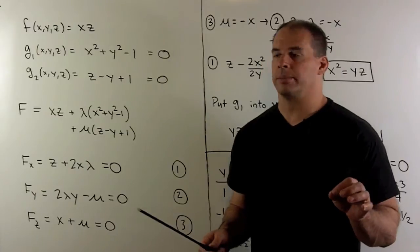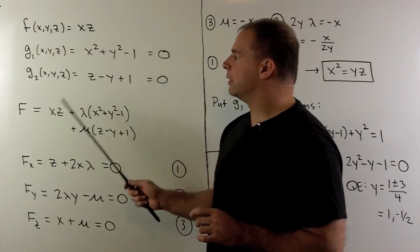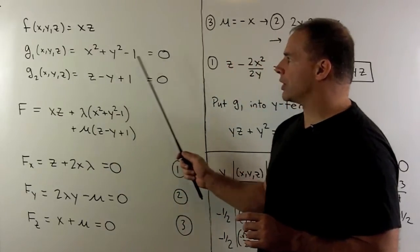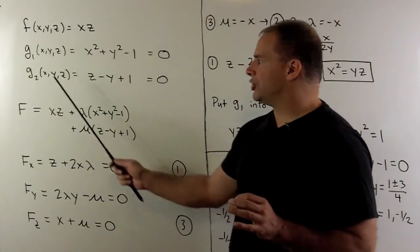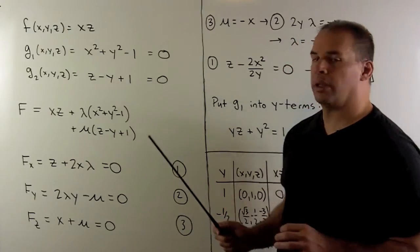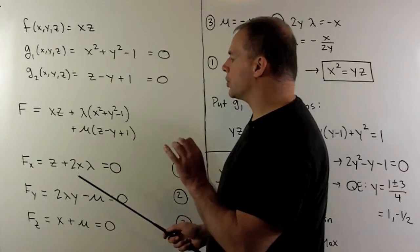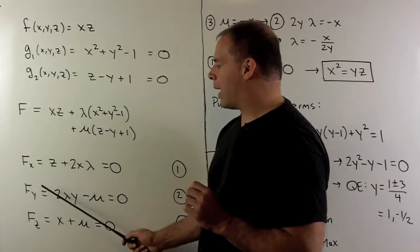Let's run through our checklist. I have small f equal to xz. G1 is x² + y² - 1 = 0. G2 is z - y + 1 = 0. I form capital F, then we take the partials with respect to x, y, and z.